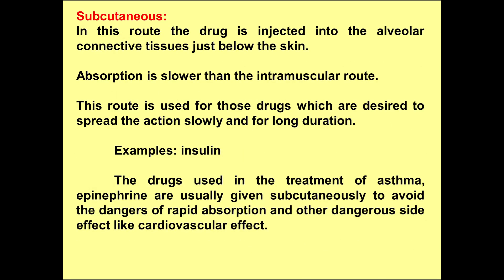Subcutaneous drugs are injected into the alveolar connective tissues just below the skin. Absorption is slower than the intramuscular route, and this route is used for drugs desired to spread their action for a long duration in a slow mode. For example, diabetic patients use insulin — insulin is a very good example under this category. Insulin is not taken orally; it is given only in subcutaneous mode. Another example is in the treatment of asthma where epinephrine is given subcutaneously to avoid dangers of rapid absorption and cardiovascular side effects.